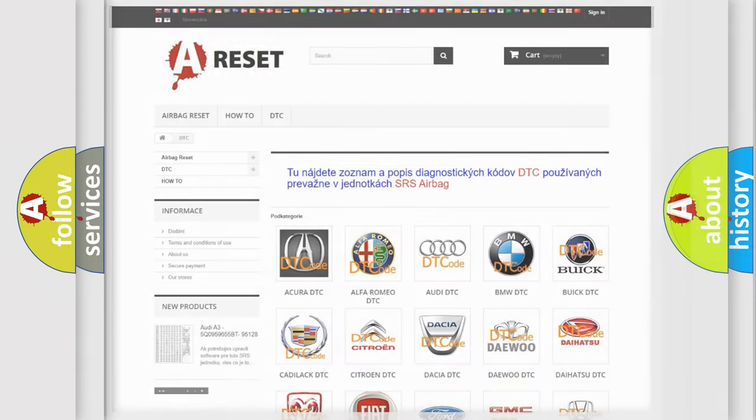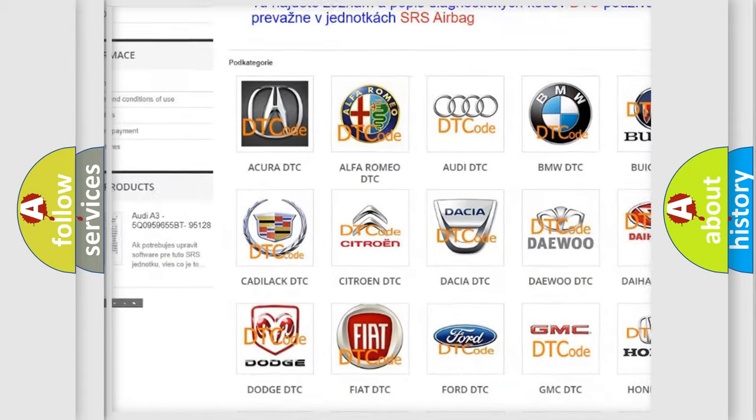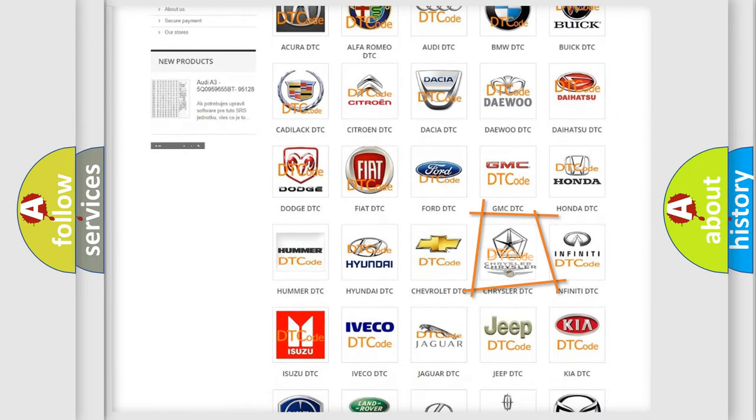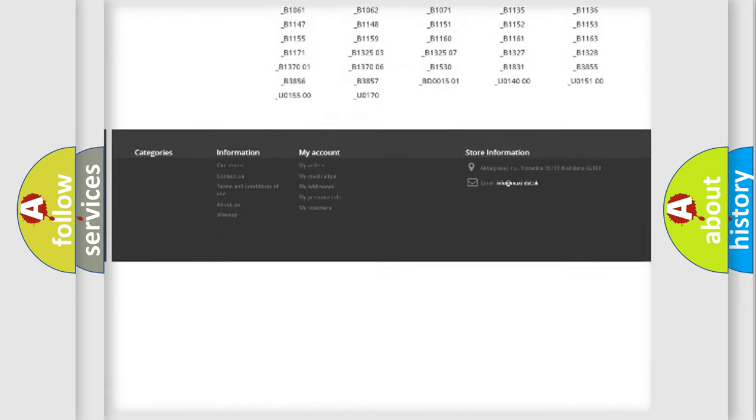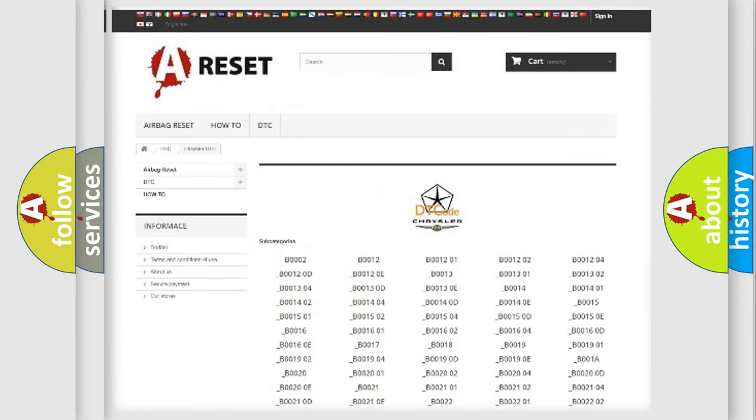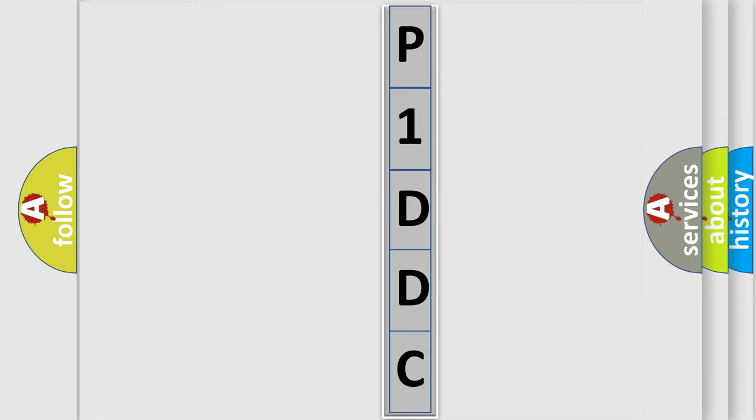Our website airbagreset.sk produces useful videos for you. You do not have to go through the OBD2 protocol anymore to know how to troubleshoot any car breakdown. You will find all the diagnostic codes that can be diagnosed in Chrysler vehicles, and many other useful things. The following demonstration will help you look into the world of software for car control units.